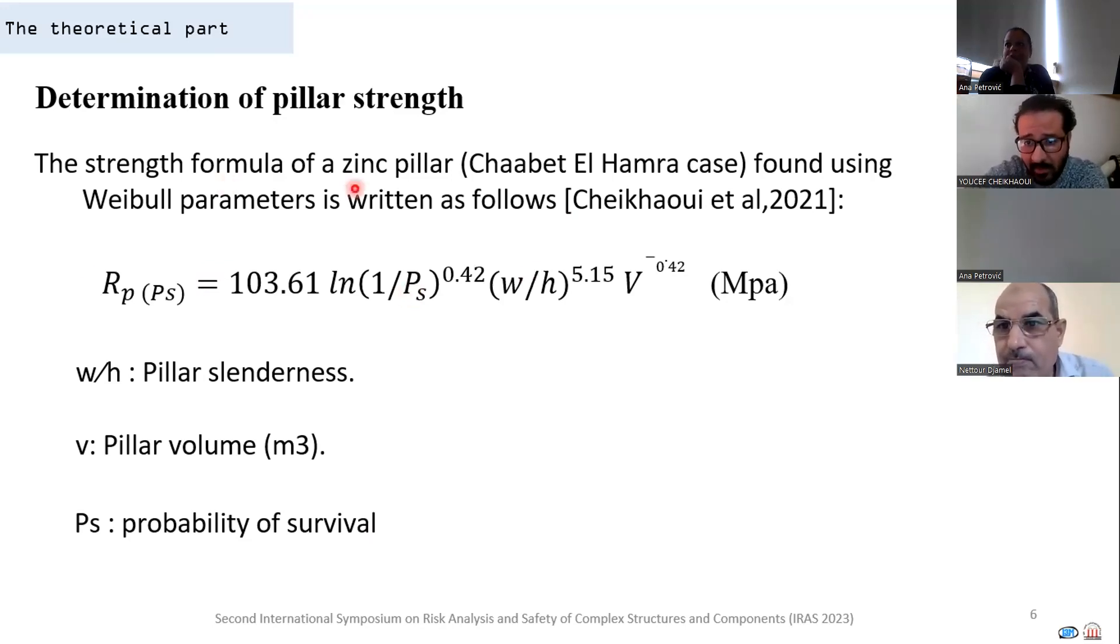This approach is based on the principle of weakest link of Weibull's law, which makes use of the notion of probability of failure to value the risk of failure. This formula takes into account the scale effect and the shape effect of pillar, as well as the estimate of its failure probability.